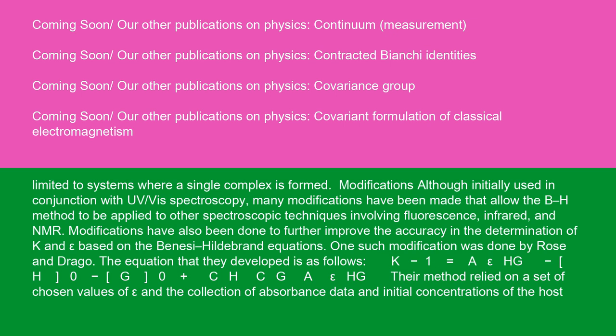Modifications: Although initially used in conjunction with UV/vis spectroscopy, many modifications have been made that allow the B-H method to be applied to other spectroscopic techniques involving fluorescence, infrared, and NMR. Modifications have also been done to further improve the accuracy in the determination of K and epsilon based on the Benesi-Hildebrand equations.